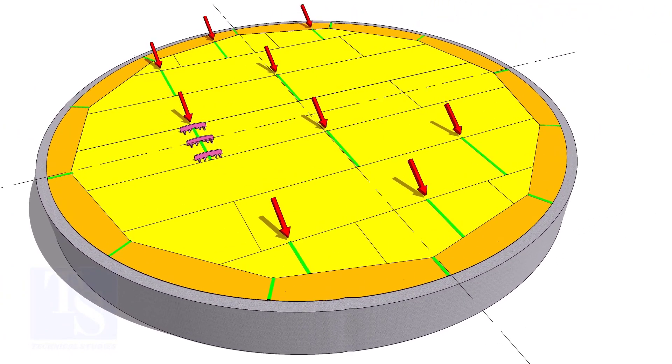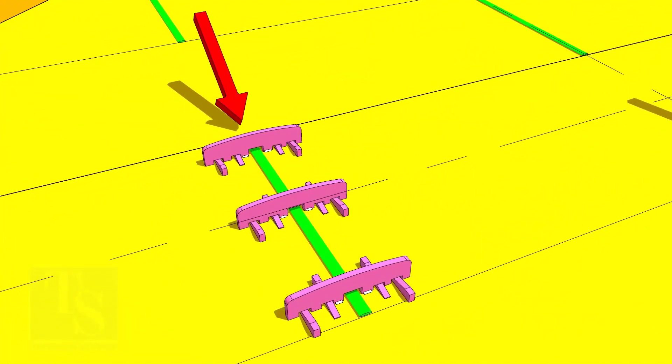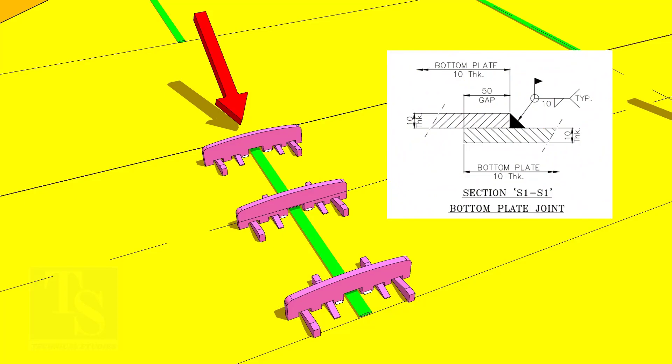At the same time, the short seams of the bottom plates also shall be welded. Avoid welding of two joints if they are closer to each other. Reduce the number of passes. Do not over-weld. More weld deposits may cause more distortion.